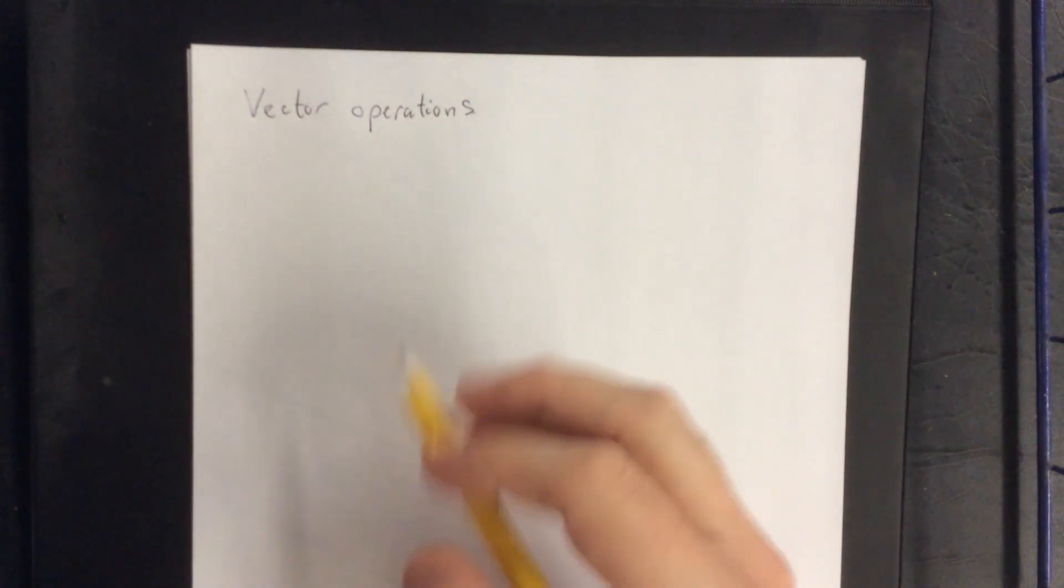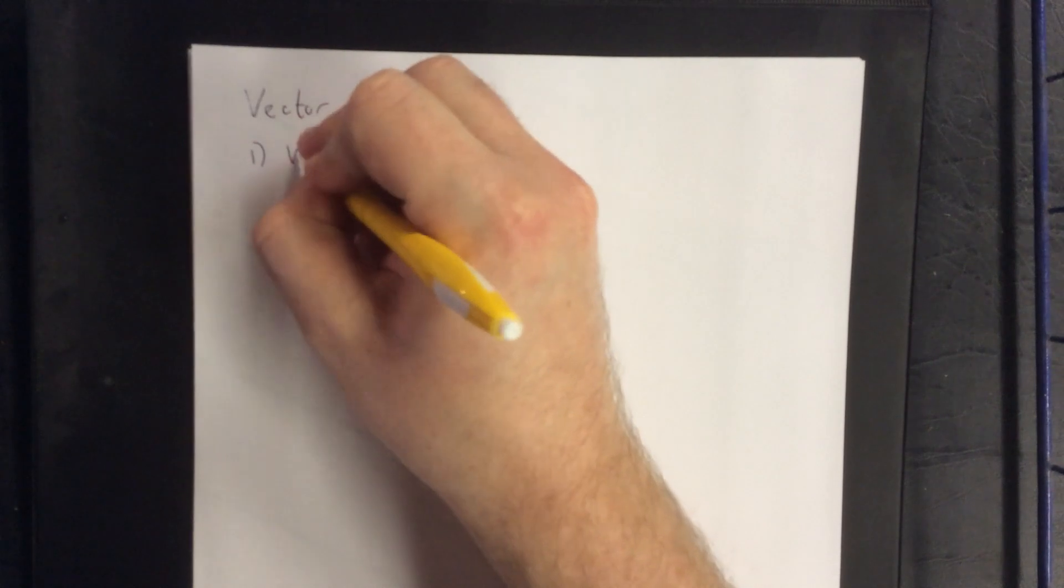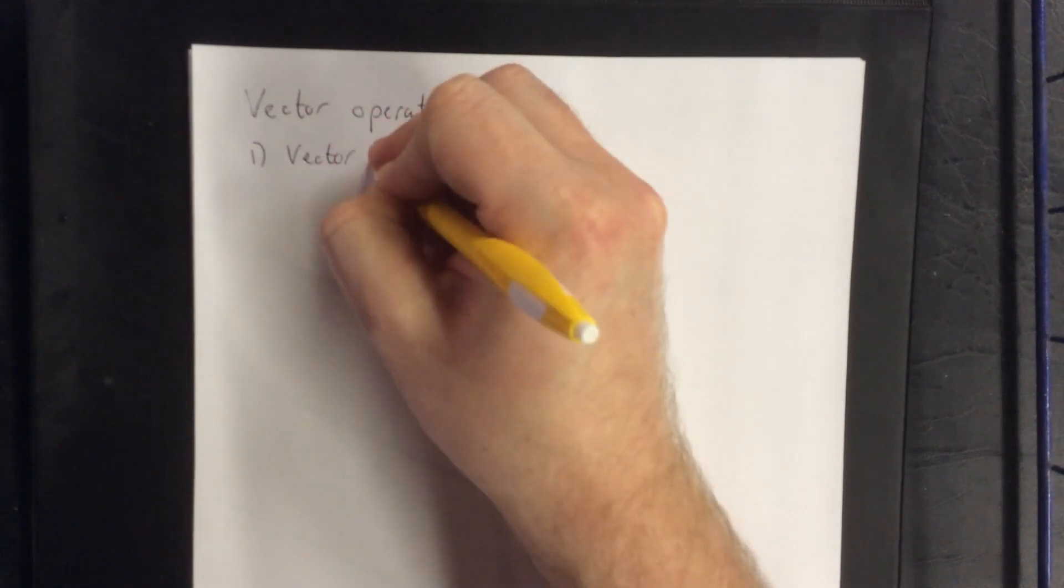In this video we're going to go over a couple of different vector operations that exist. So given a couple of vectors, here are certain things that we can do with them. The first one is known as vector addition.